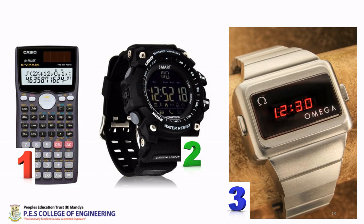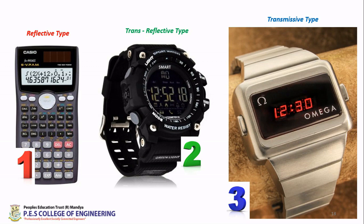The answer: the first one is reflective type. The second one is transreflective type. The third one is transmissive type — internally having a light source, or an external source can also work. This covers the topic of LCDs. If you have any issues, contact me or drop a comment below.